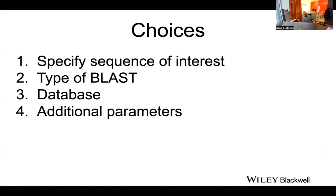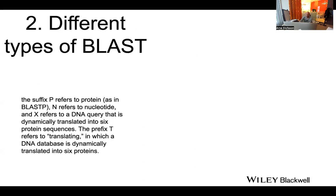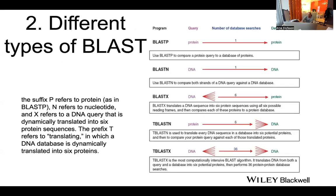When you're on BLAST you need to do four things: specify the sequence you want to start with — it could be a DNA sequence or a protein sequence — find the type of BLAST you're going to run, find the database you're going to search, and then set additional parameters. First you specify a sequence, then you choose the type of BLAST to run.